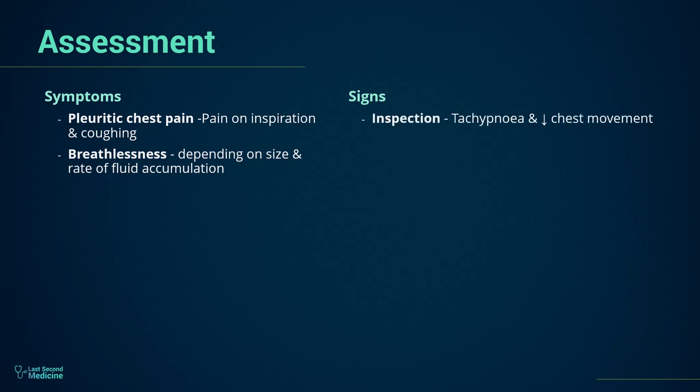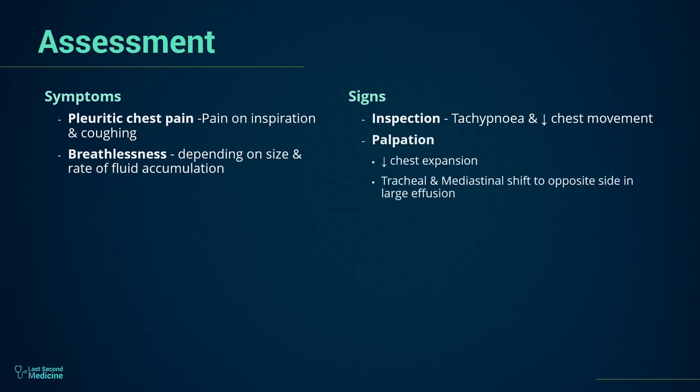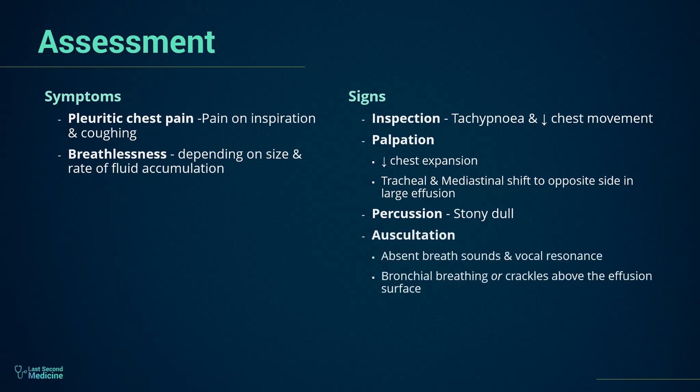When the effusion is present, on inspection, tachypnea and reduced chest movement on the affected side may be found. Palpation will confirm reduced expansion on the affected side. The trachea and mediastinum may be moved to the opposite side of the effusion if it is large. Percussion will yield a stony dull note over the effusion. Upon auscultation, breath sounds and vocal resonance will be absent over the effusion. You may be able to hear bronchial breathing or crackles above the effusion surface.